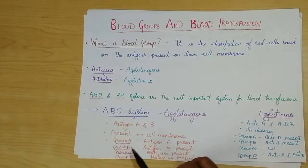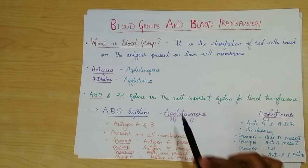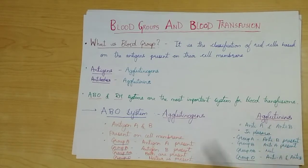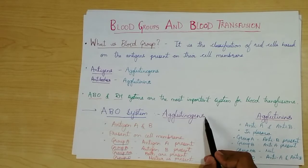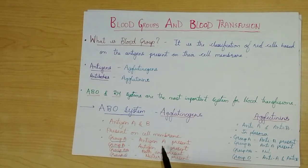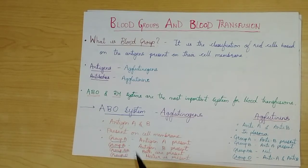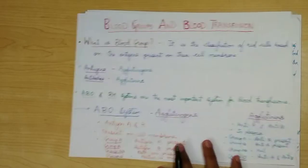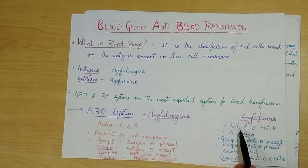Under the ABO system, they are again divided into agglutinogens and agglutinins. For agglutinogens, there is antigen A and antigen B present on the cell membrane. For group A, antigen A is present. For group B, antigen B is present. In group AB, both are present. And in group O, neither of them is present.